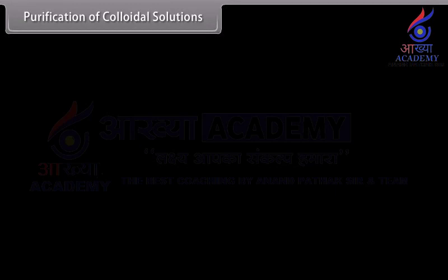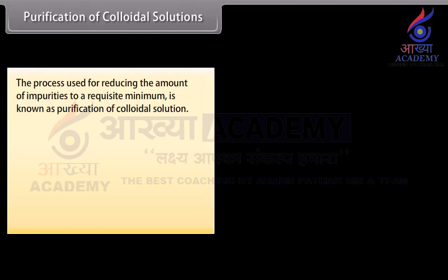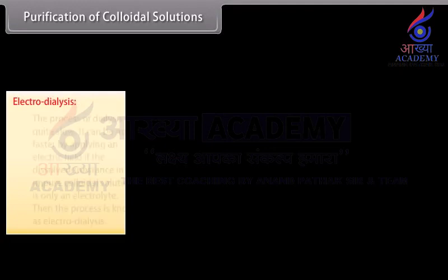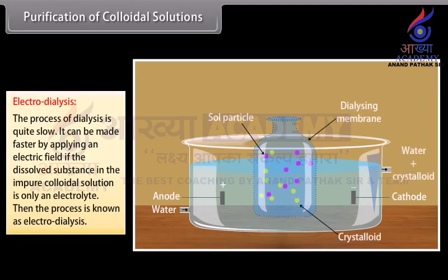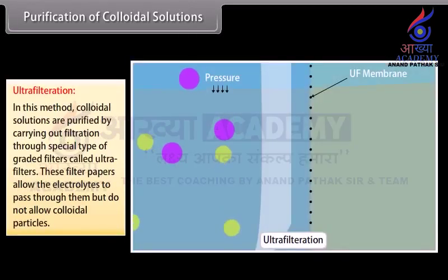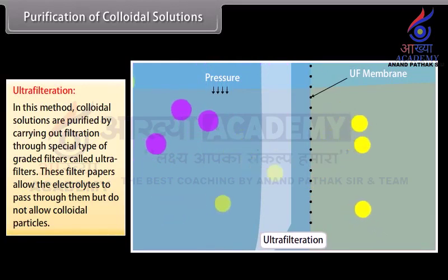Purification of colloidal solutions. The process used for reducing the amount of impurities to a requisite minimum is known as purification of colloidal solution, and can be done by the following methods. Dialysis: a process of removing a dissolved substance from a colloidal solution by means of diffusion through a suitable membrane; the apparatus used is called a dialyzer. Electrodialysis: the process of dialysis is quite slow; it can be made faster by applying an electric field if the dissolved substance is only an electrolyte — this is called electrodialysis. Ultrafiltration: colloidal solutions are purified by filtration through special graded filters called ultrafilters, which allow electrolytes to pass through but do not allow colloidal particles.